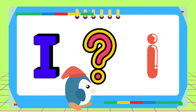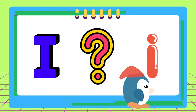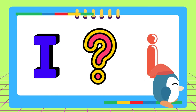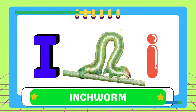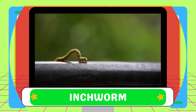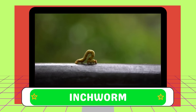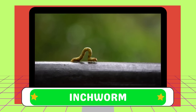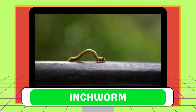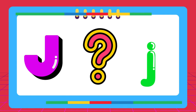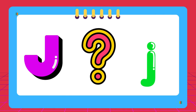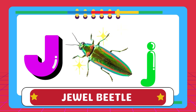I — I for inchworm. J — J for jewel beetle.